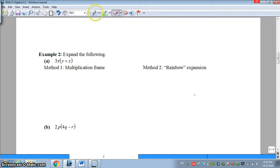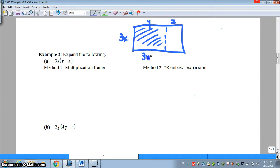This can be seen as a rectangle with side 3x and the other side is y plus z. So you can see there's a length of y followed by a length of z. So if I need to find this area on the left, this can be seen as 3x multiplied by y, which I will obtain 3xy.